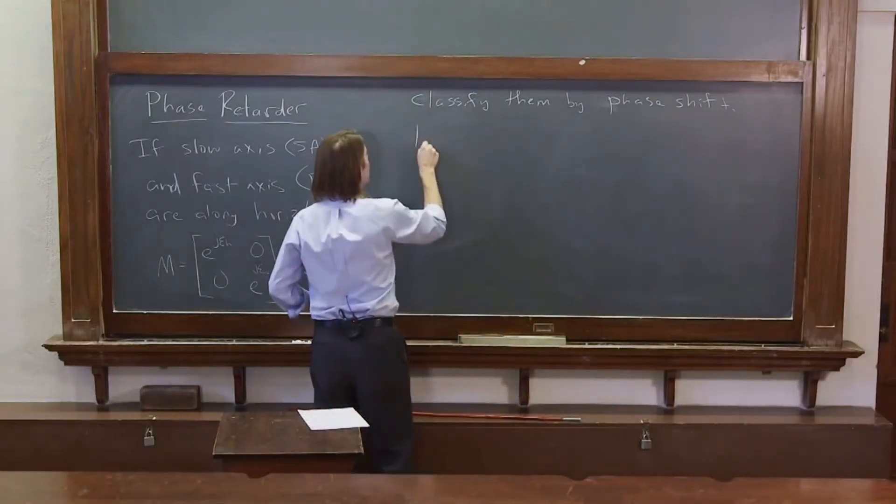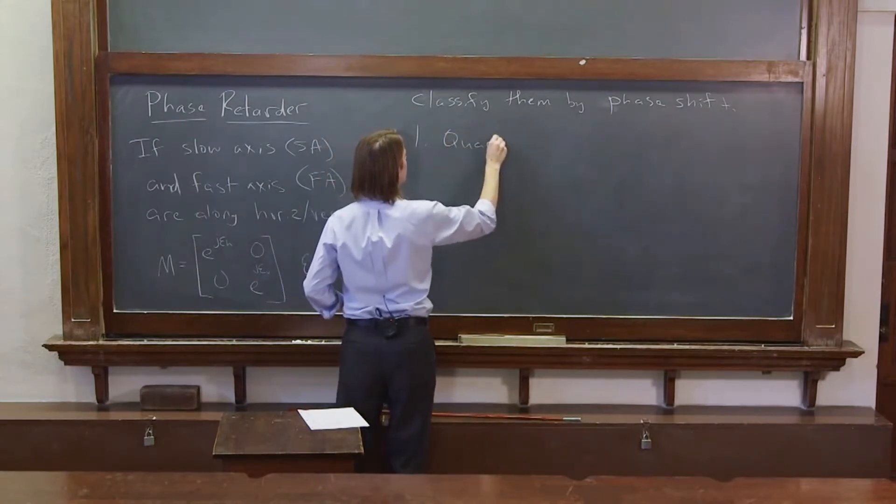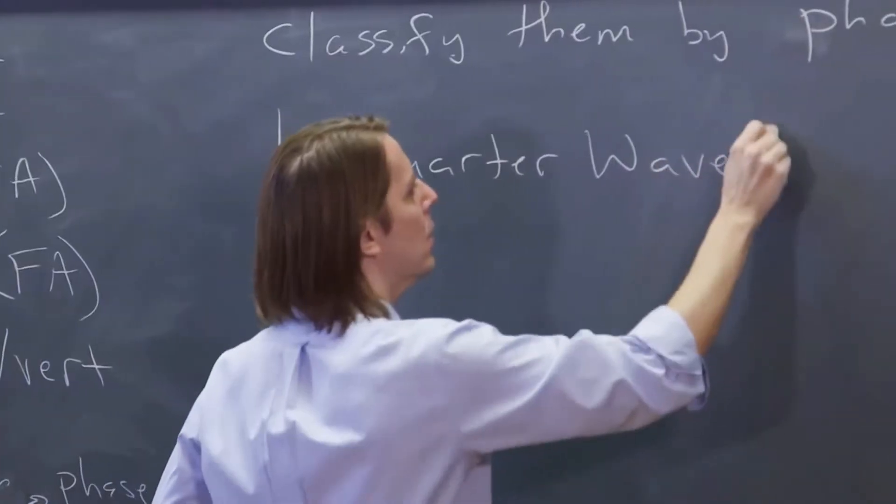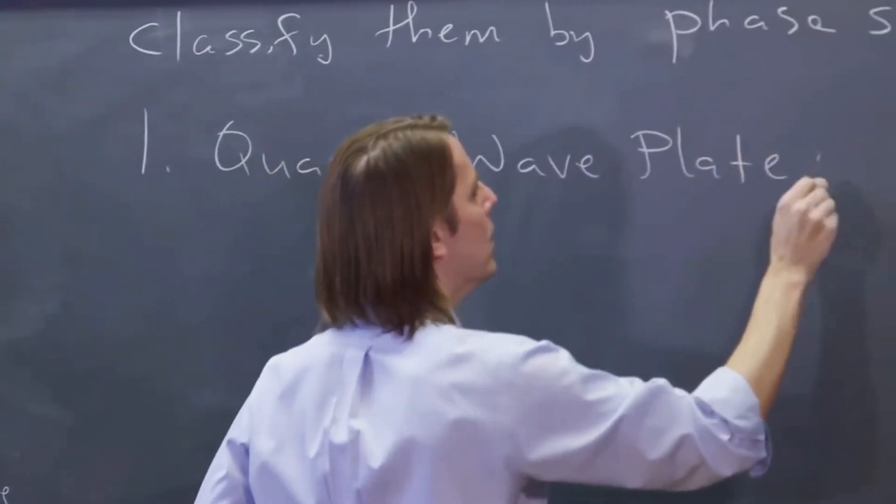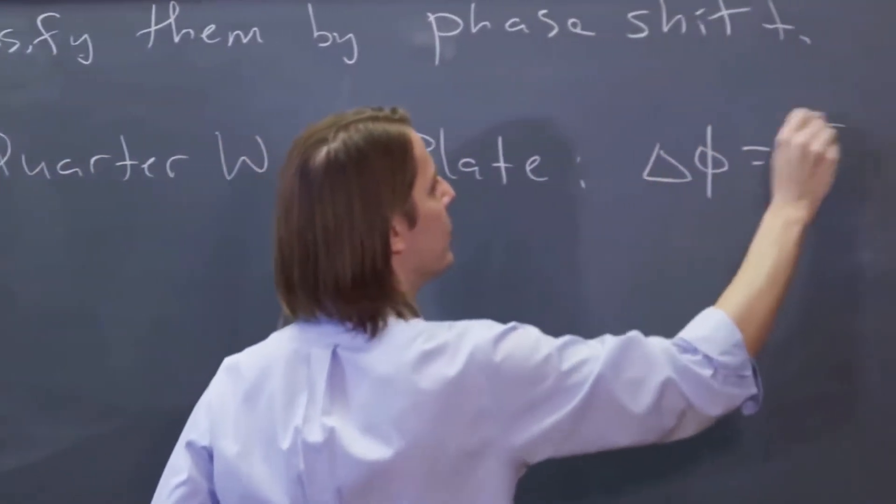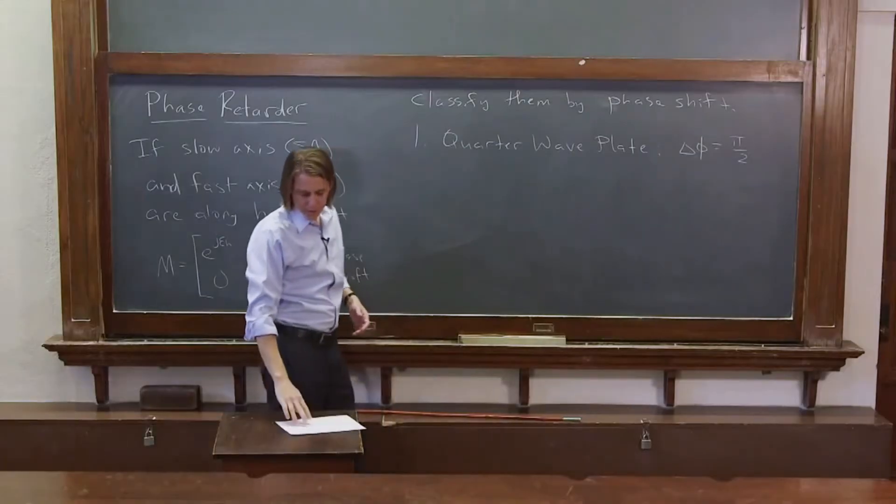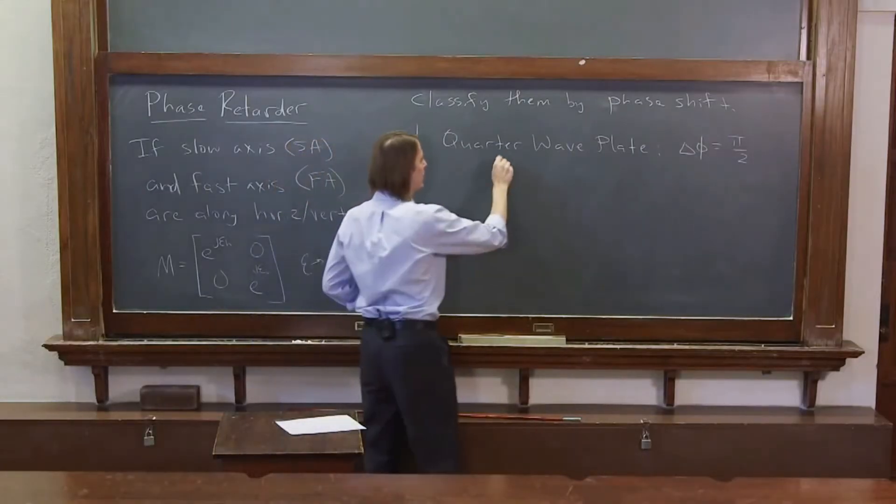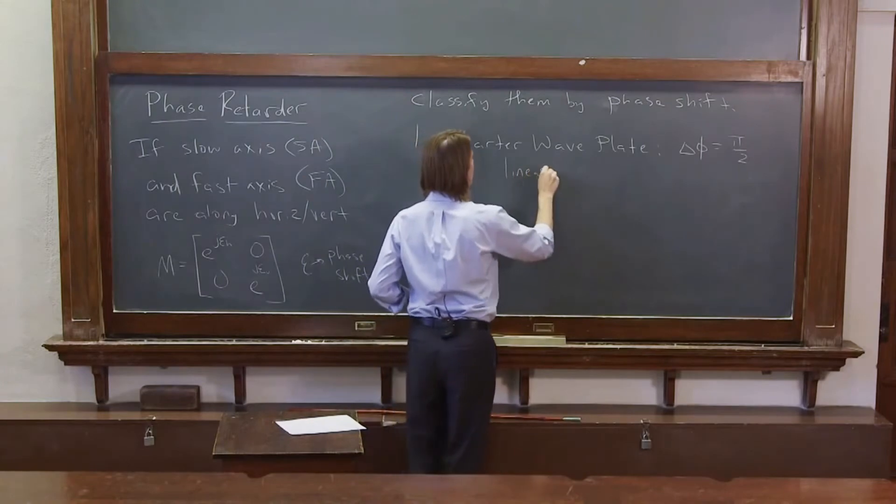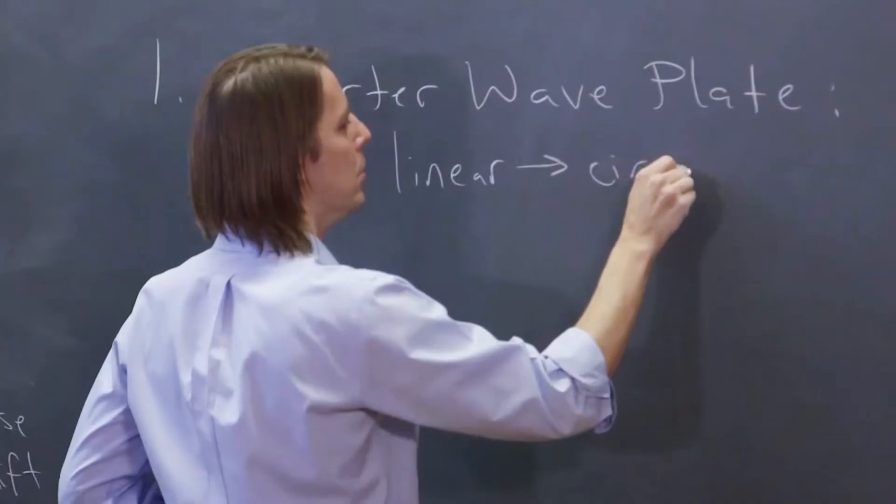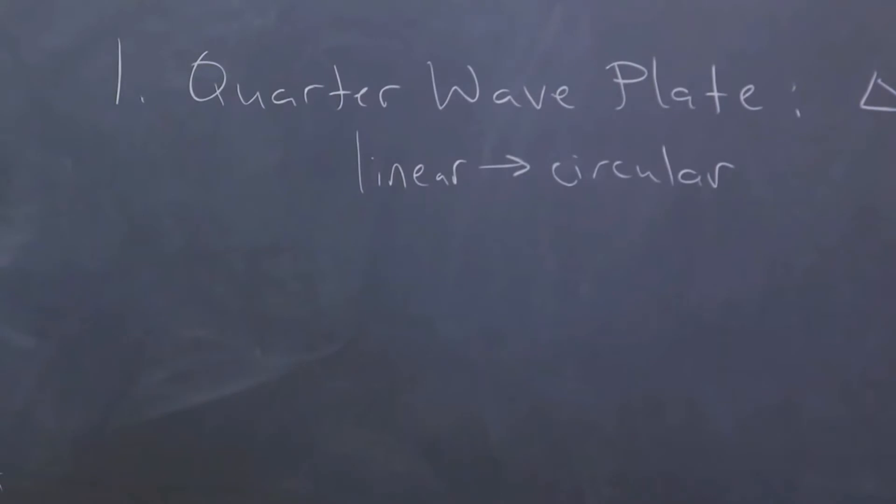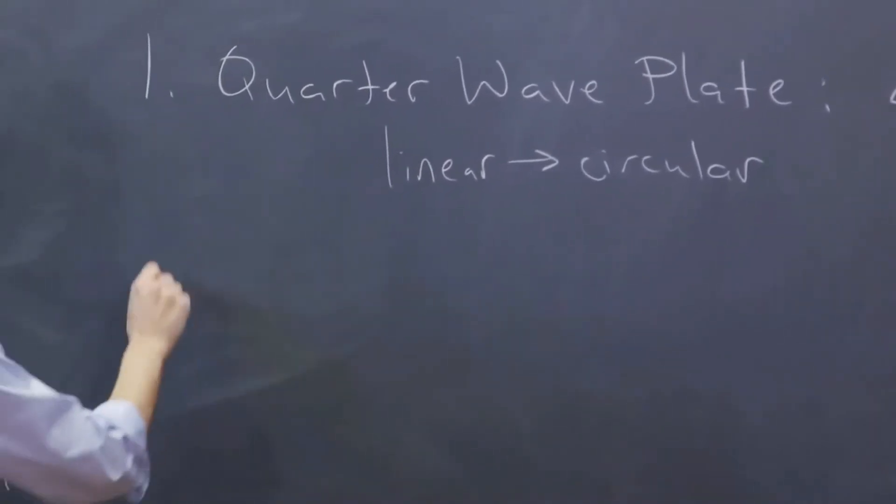The famous one here is the quarter wave plate, where delta phi is a quarter wave, is pi over 2. What this will do is it converts linear to circular polarization. So let's draw that real quick and imagine how that would work.